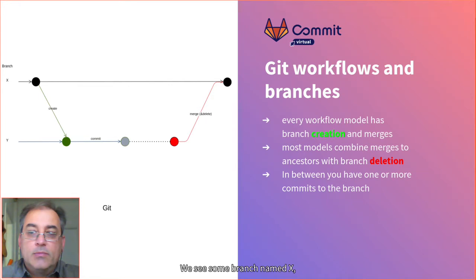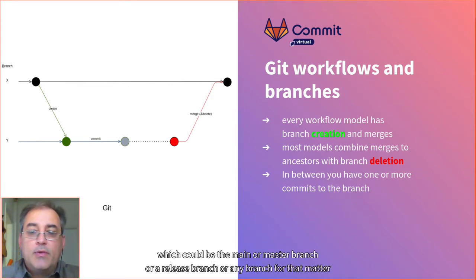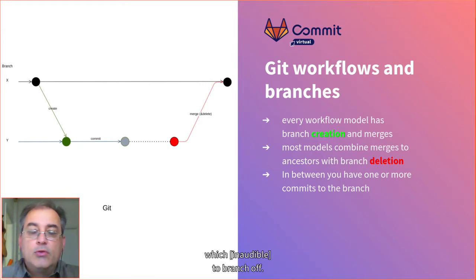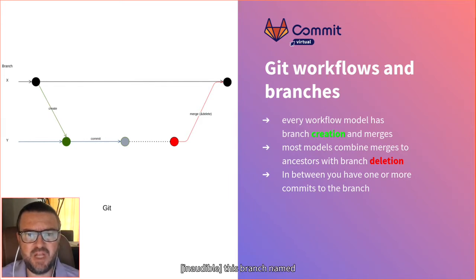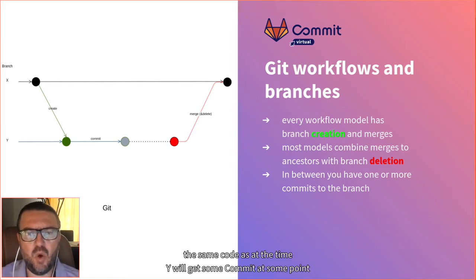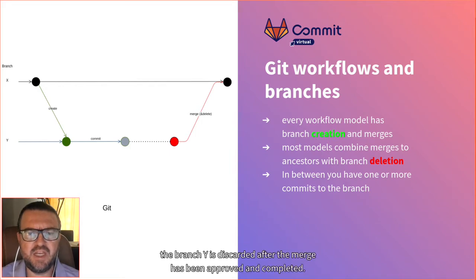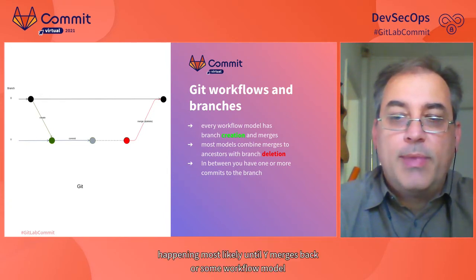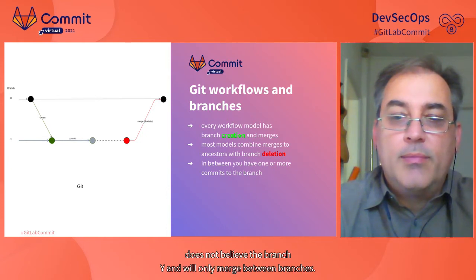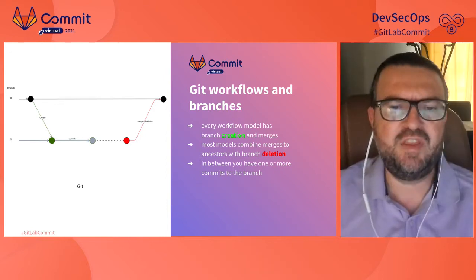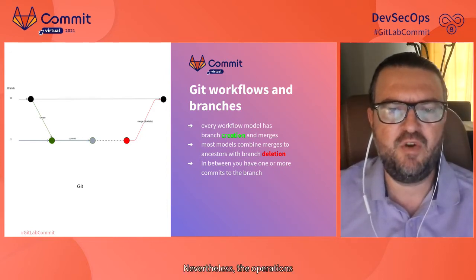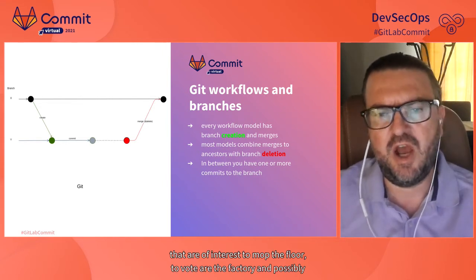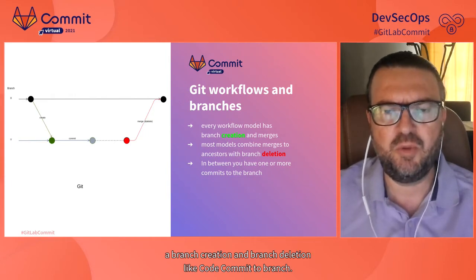Let's first review what branches are in Git and then apply the ideas to all other components. We see a branch named X, which could be main, master, a release branch, or any branch. Within our framework we can branch off — we create a new branch named Y. The first commit of Y has the same code as X at that time. Y will get some commits and at some point be merged back to X. In most workflows branch Y is discarded after the merge. The three main operations of interest to map to Vault, Artifactory, and OpenShift are: branch creation, deletion, and branch changes like code commits.